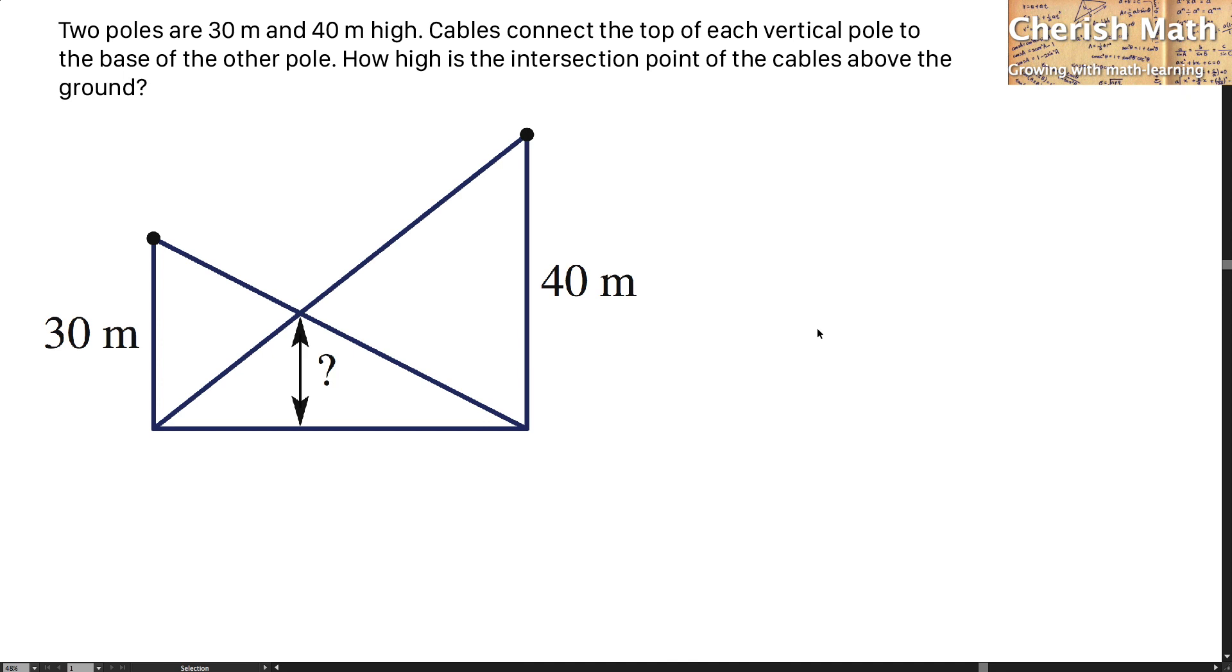Two poles are 30m and 40m high. Cables connect to the top of each vertical pole to the base of the other pole. How high is the intersection point of the cables above the ground?